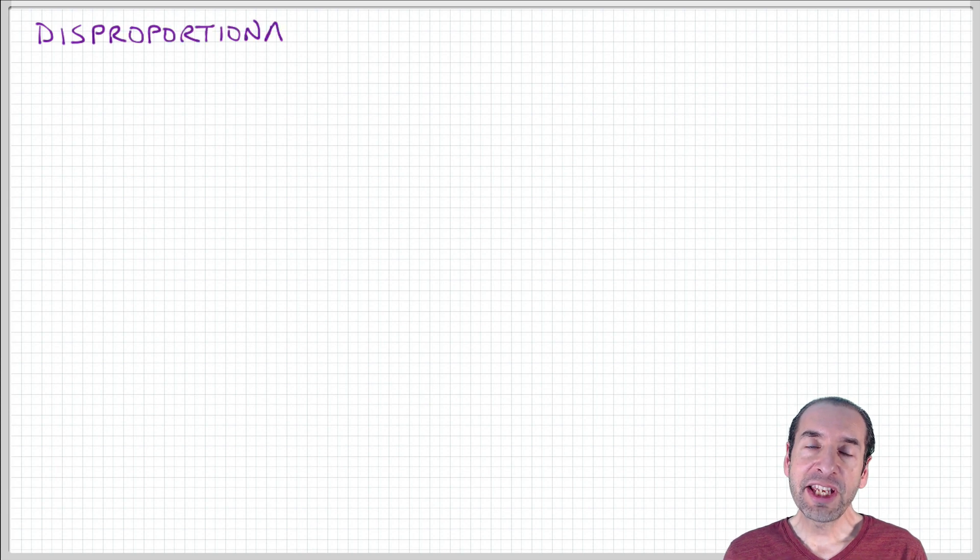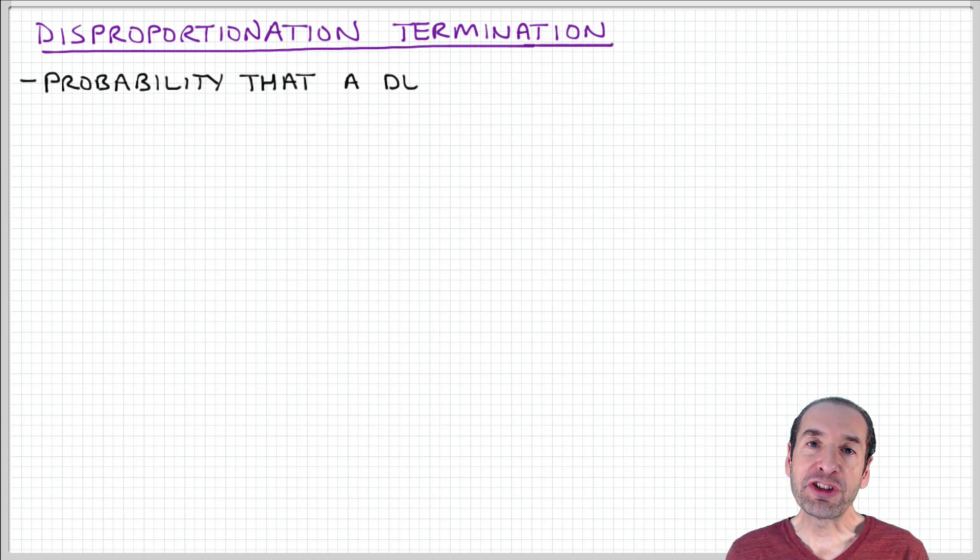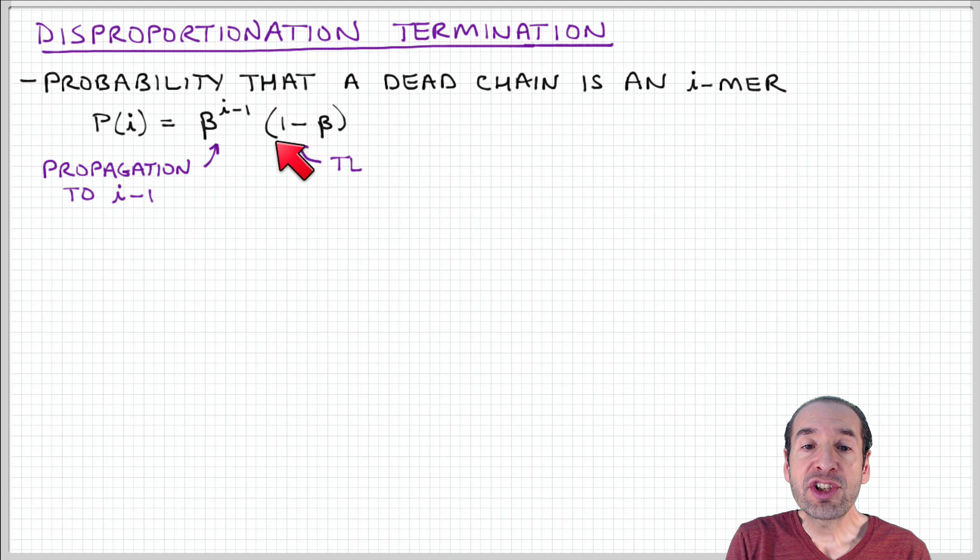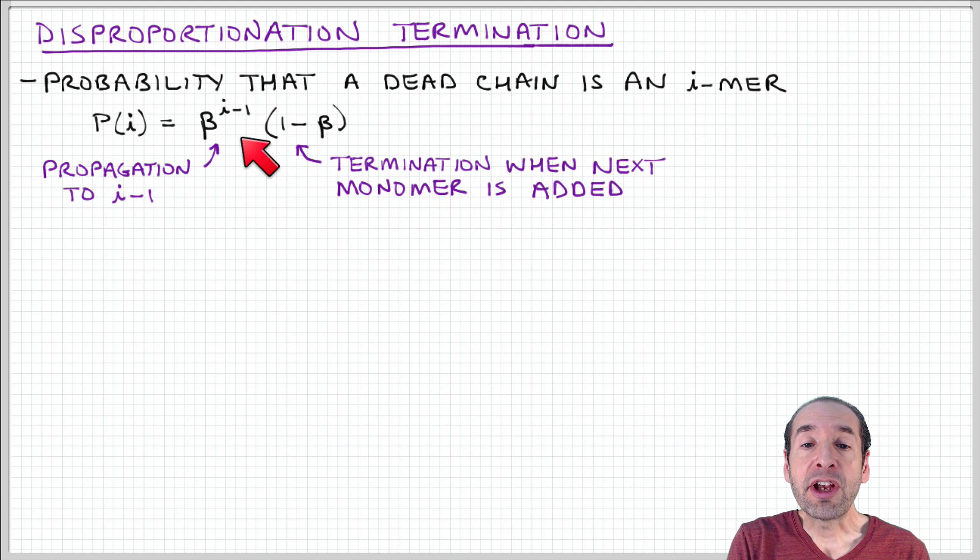Let's consider first the case of disproportionation termination, and I think you can understand why we would want to look at that one first. It's the most straightforward because every active chain will terminate to form a dead chain. We can ask: what is the probability that a dead chain is an i-mer? We can express that as a product of the probability that a chain will propagate to a length i-1 times the probability that the chain will terminate on the next step, which is (1-β). Remember, β is the probability that the chain will continue to propagate. So (1-β) is the probability that the chain will terminate.